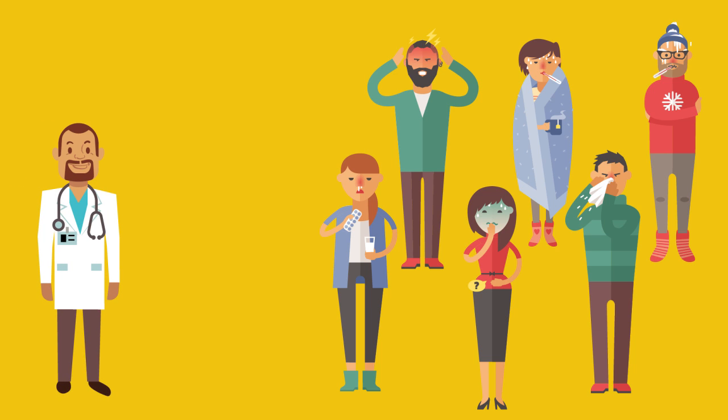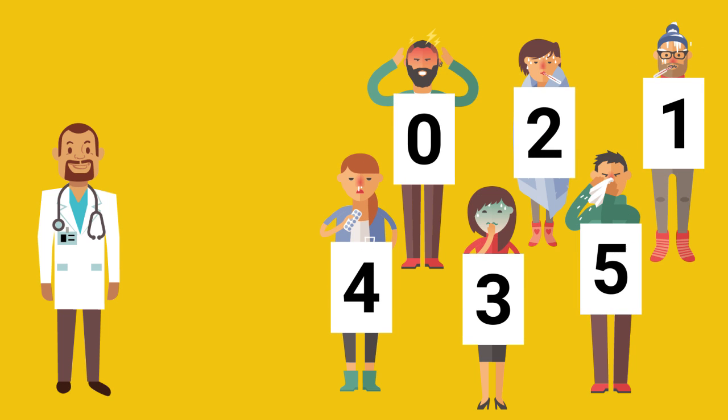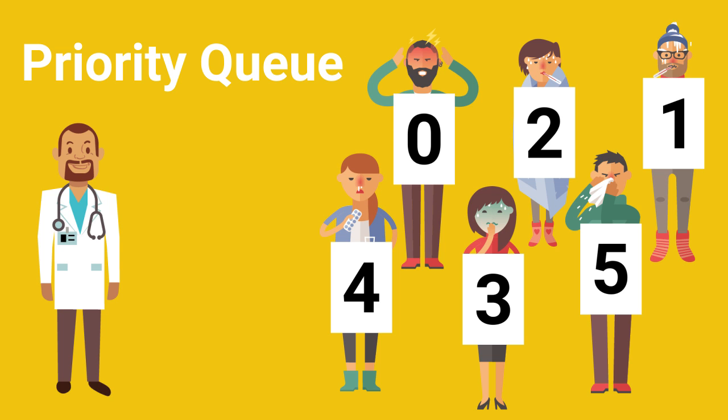For example, doctors in a hospital emergency room want to see the most critical patient first, not necessarily the patient who arrived first. Priority is usually indicated by a particular value associated with the job. When a collection of objects are organized by priority, this is known as a priority queue.